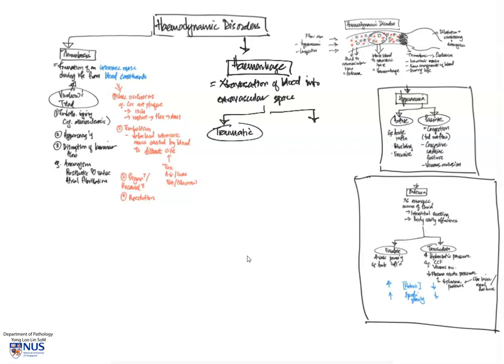Hemorrhage can in fact be traumatic or even spontaneous or non-traumatic. Of course, in the instance of trauma, there is injury to the blood vessel, for example a cut, and this can give rise to bleeding.